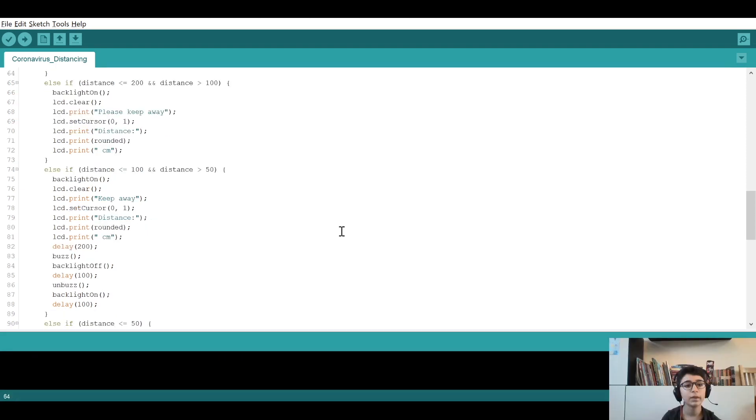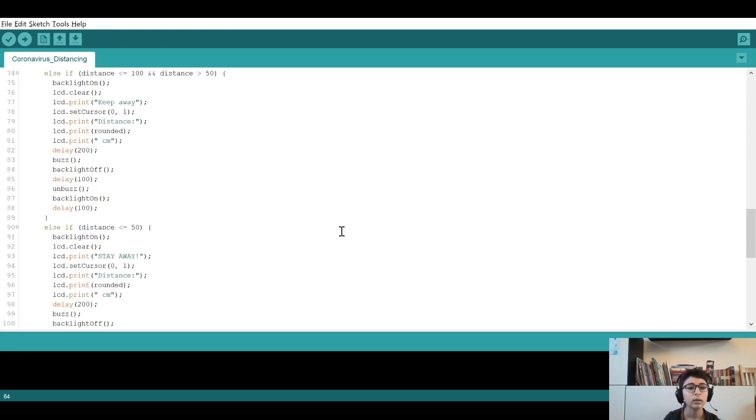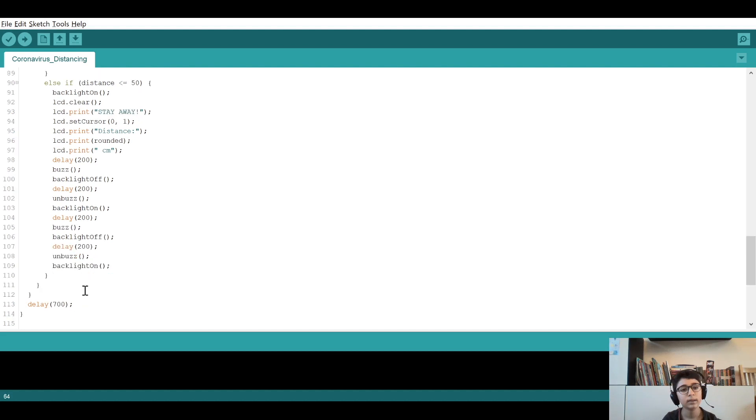If the distance is less than two meters and it's more than one meter, the LCD shows please keep away and the distance underneath. If there is someone closer than one meter but farther than 50 centimeters, the LCD shows keep away and the distance of the person. If the distance is less than 50 centimeters, the LCD shows stay away and the distance of the person underneath.